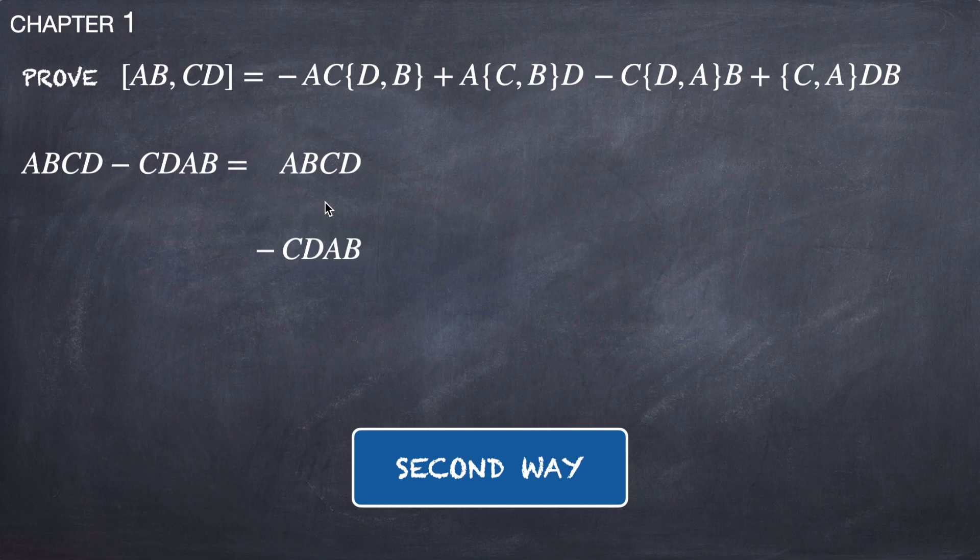Okay, there is a second way. We are going to write ABCD and minus CDAB in different lines because we are going to add some terms on the right hand side of the equation in such a way that we can combine them to form these anti-commutators. Obviously, the sum of the terms that we are going to add must be zero, so...